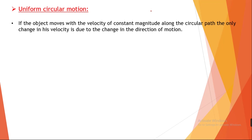If the object moves with a velocity of constant magnitude along a circular path, the change in its velocity is due to the change in the direction of motion. So here, the direction of motion is not going straight — it is curving gradually, which means the direction of motion is changing, and this changes the velocity.